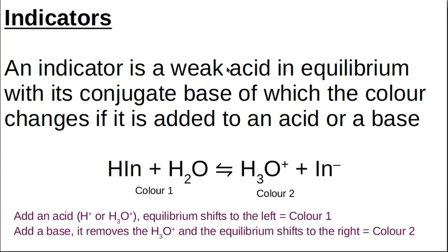The color of the weak acid and its conjugate base are different. If you have the acid and water, it's one color. If the indicator has split up — ionized — the bond has been broken and you've ended up with a hydronium ion and the indicator as an ion, giving a second color. So if the equilibrium lies toward the covalent form, it's color 1; if it's ionized, it's color 2.